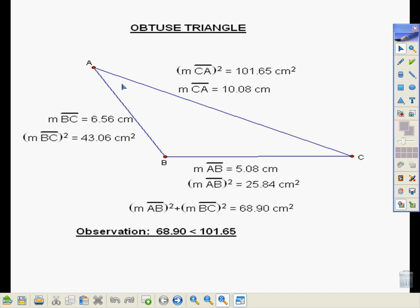We made ourselves an obtuse triangle A, B, C, and went ahead and measured each of the three sides. Using the Pythagorean Theorem, which is A squared plus B squared equals C squared, we went ahead and squared each of the three sides.